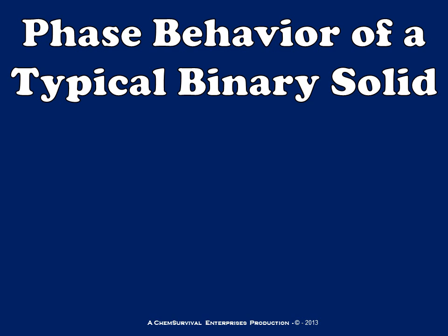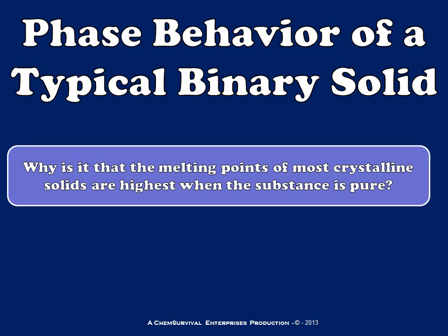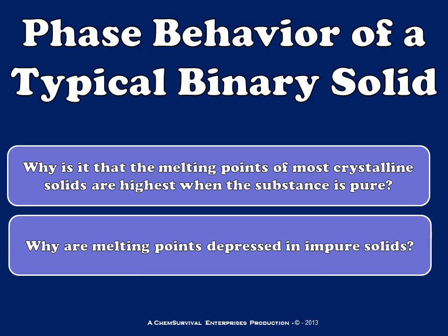To do that we're going to discuss the phase behavior of a typical binary solid, and by binary solid I mean a mixture of two compounds that are blended together really closely at the molecular level. The question we ask ourselves first about this kind of system is why melting points of most crystalline solids are highest when those substances are pure — or, put another way, why are melting points depressed in impure solids? To answer that we're going to characterize the behavior of a typical binary crystalline mixture.